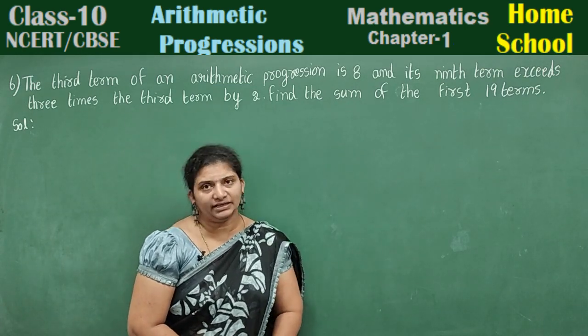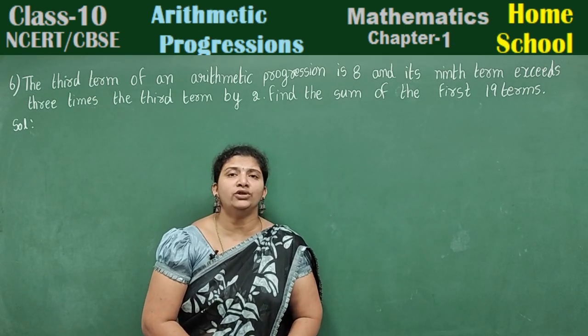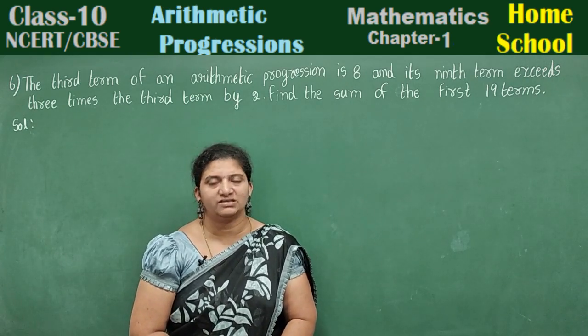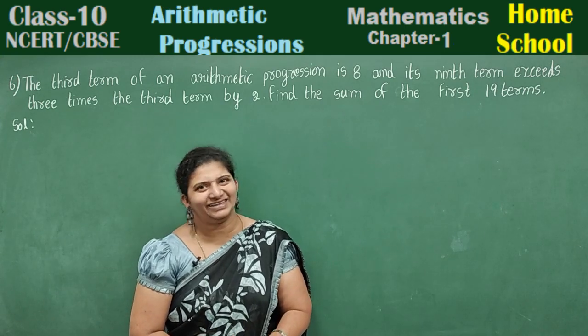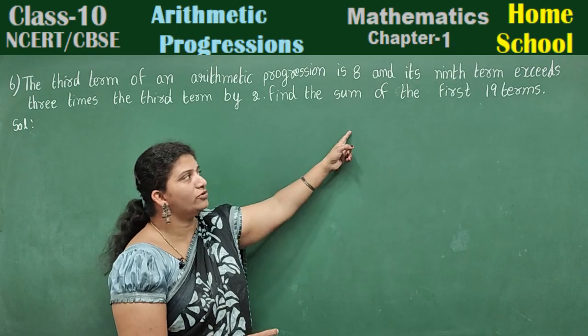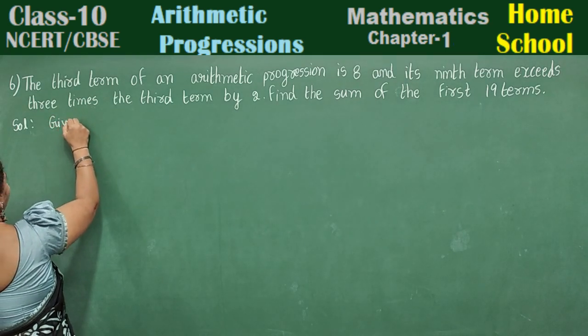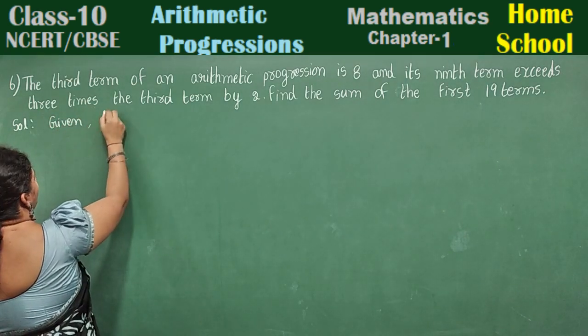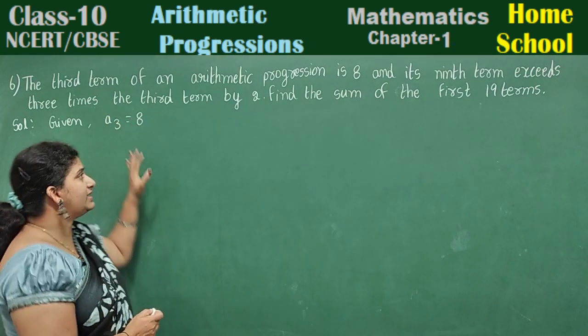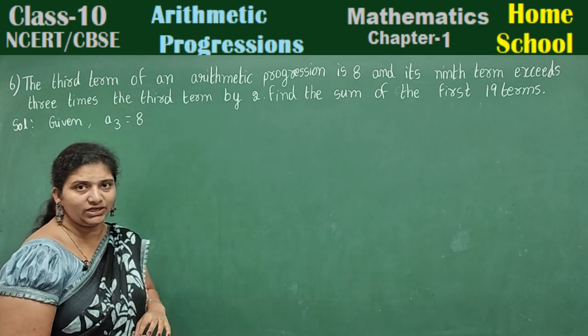Find sum of the first 19 terms. If you want to find anything in arithmetic progressions, we need to know first two terms. That is, first term and common difference, represented by A and D. Let's find out that by using these statements. Solution. Given, third term of an AP is 8. A3 is equal to 8.